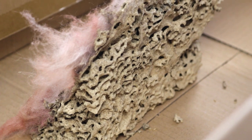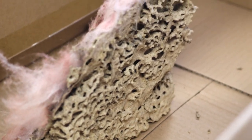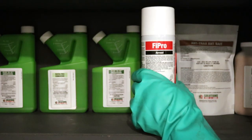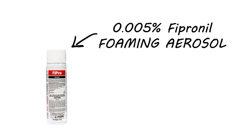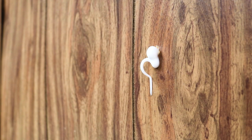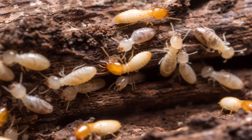Invasive pests can cause a lot of structural damage in places we can't normally see. That's when products like Fipro Foaming Aerosol come in handy. Fipro is a 0.005% fipronil aerosol insecticide that will expand to fill the space it's applied to. So you won't just kill the insects you see — you'll also kill the ones you don't.